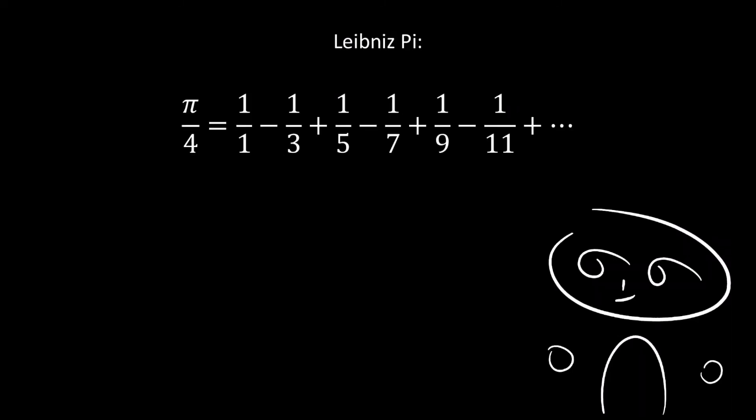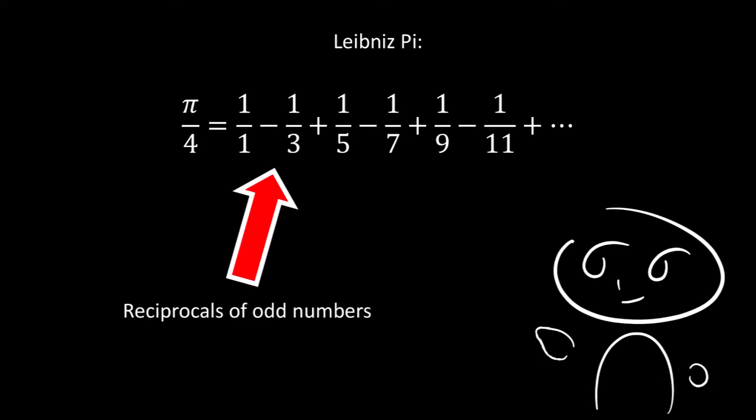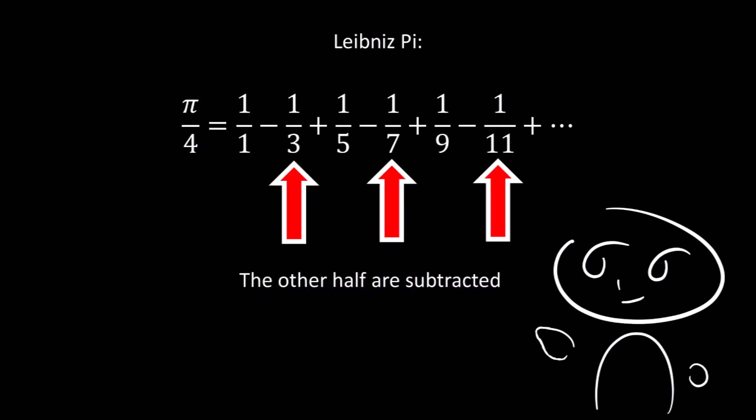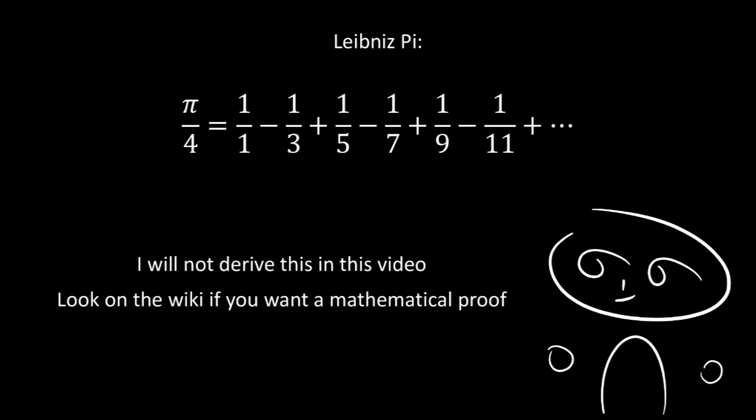This here is the formula for Leibniz pi. What it does is it takes the reciprocals of odd numbers, adds half of them, and subtracts the other half. Note that I will not derive this in this video, and if you want a mathematical proof, look on the wiki.